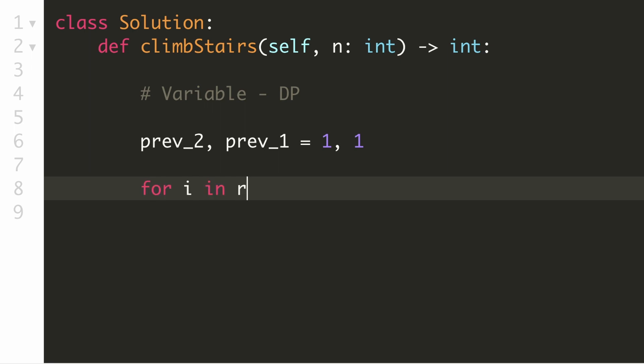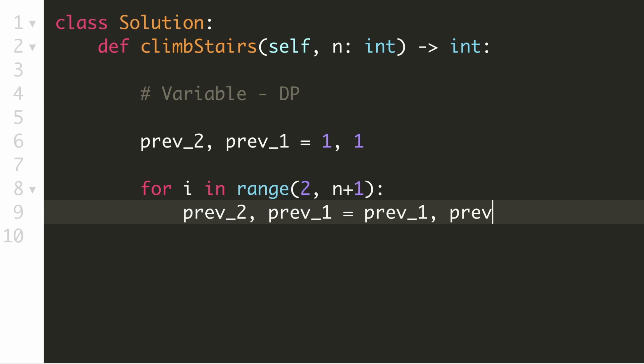Our solution will be very similar to the tabular DP solution. We'll go through each position starting from 2 till n. Now we'll calculate the result for this position by adding the two previous results. We also have to update these two values for the next position in our for loop.